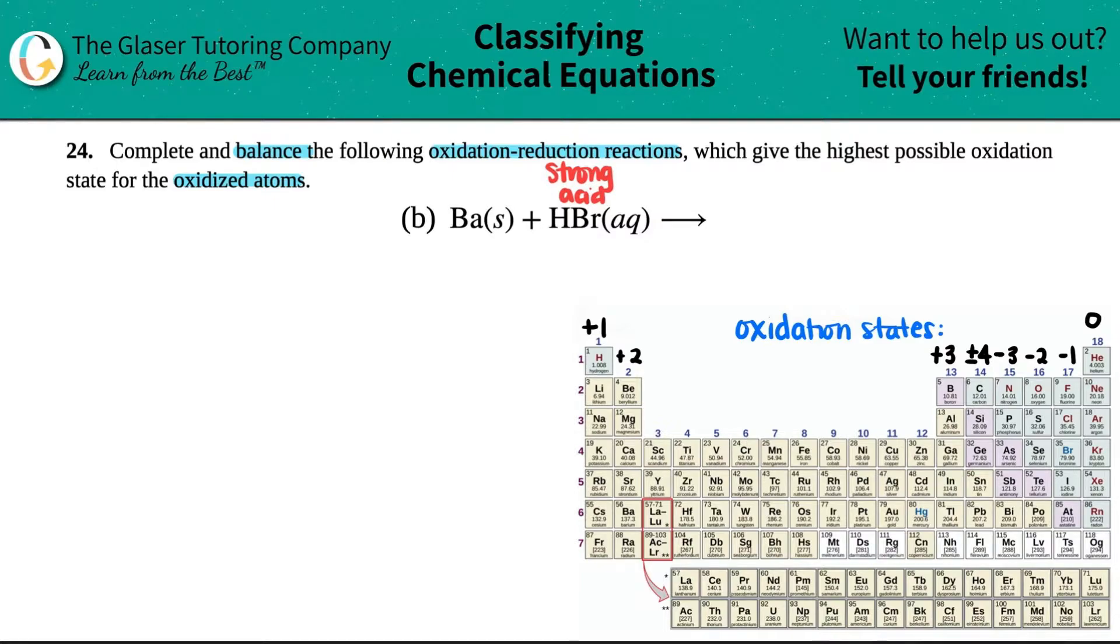Now let's see what the products are. So Ba, barium, which was a solid, is mixing with HBr, aqueous, and now we got to find out the products.